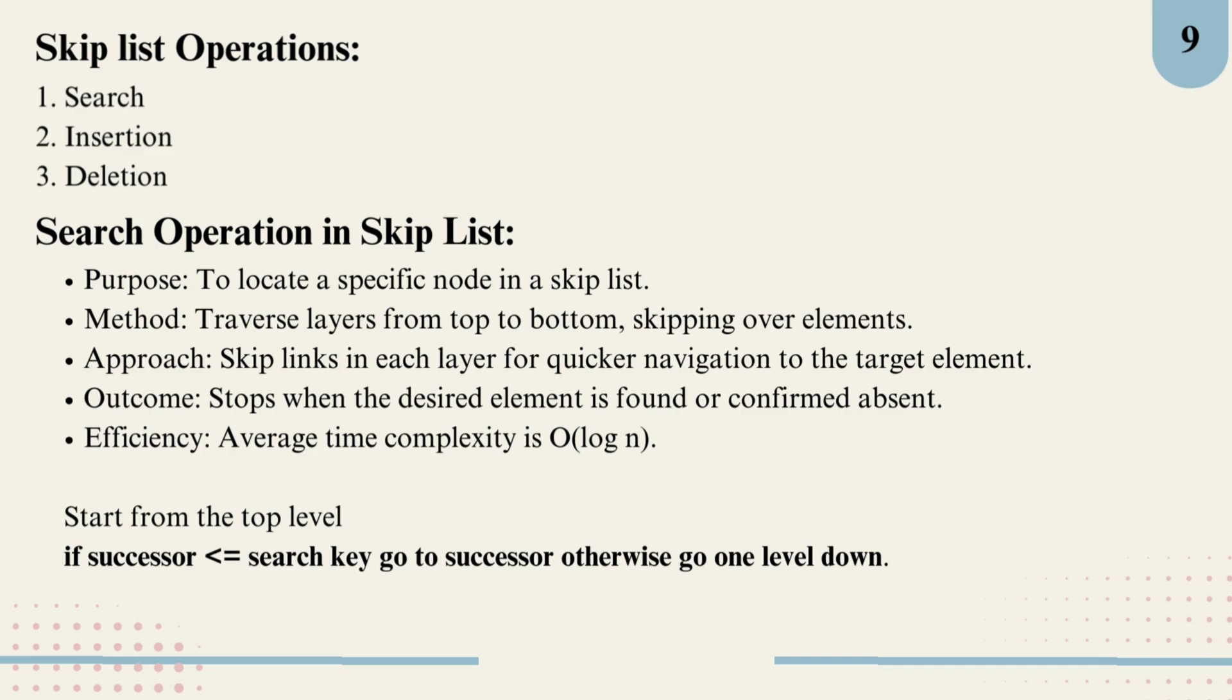If the successor is greater, we simply drop down one level. By repeating this process, we efficiently zero in on the target element, either finding it or confirming it's absent. The outcome is this layered approach lets us skip over large sections of nodes, making the search faster than in a traditional linked list. Coming to the efficiency: the average time complexity for a search in a skip list is O(log n), making it highly efficient for large data sets.